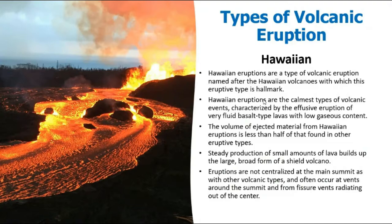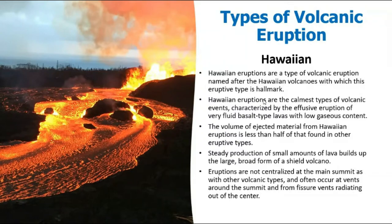Volcanoes are majorly categorized into five types. The first is the Hawaiian type — named after the Hawaiian volcanoes — which is the calmest type of eruption. It is characterized by effusive eruptions of very fluid basaltic lavas with low gas content. This is an example of the fissure type of volcanic eruption that I was discussing earlier.